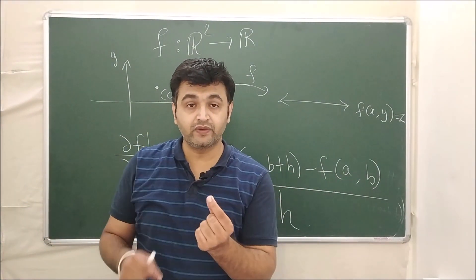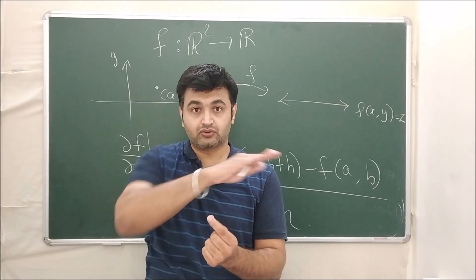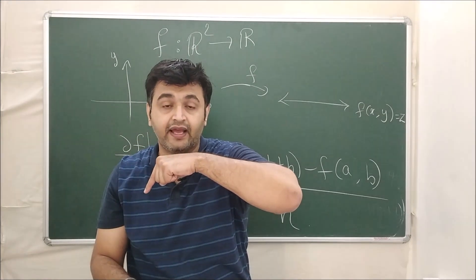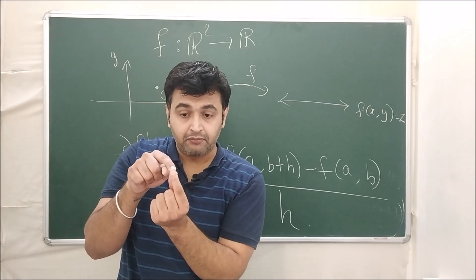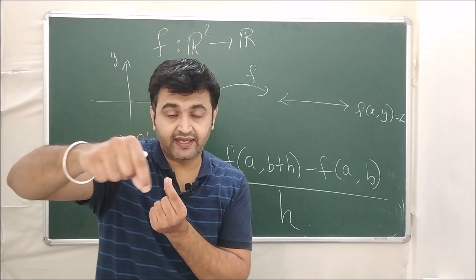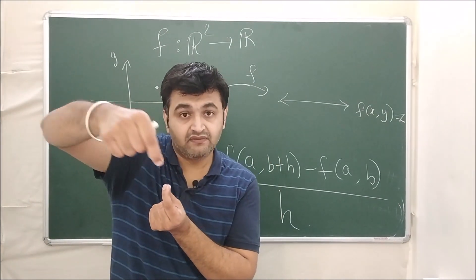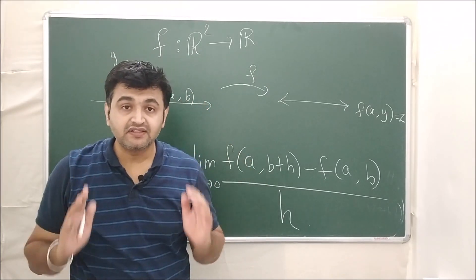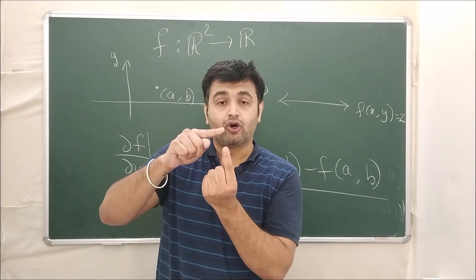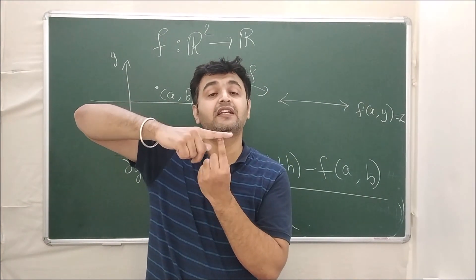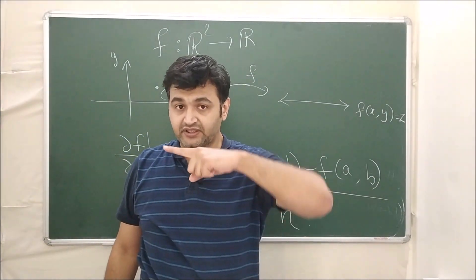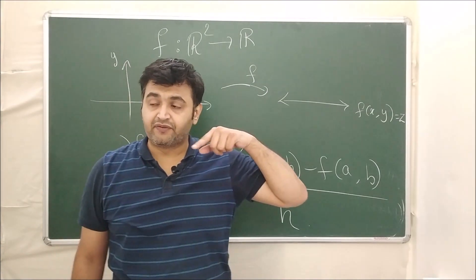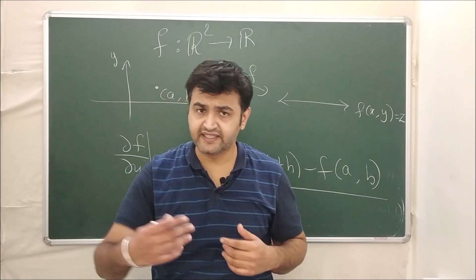For the partial derivative with respect to y, you fix the x component and allow an increment in y. The plane x = a cuts the surface to give a curve, and similarly you construct points P and Q on that curve, take the slope of the secant line, and let h go to zero to get the slope of the tangent line along the y-axis. To summarize: on a surface, at any point, there are infinitely many tangent lines with infinitely many slopes. We categorize them as partial derivative with respect to x (slope along x-axis), partial derivative with respect to y (slope along y-axis), and the directional derivative for any other direction.